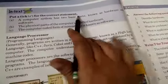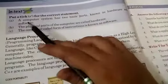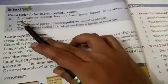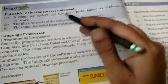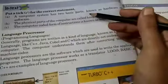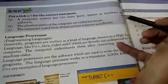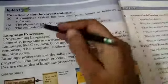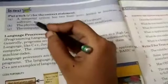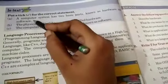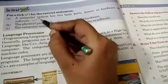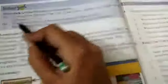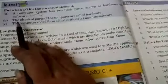Tick the correct statement. A computer has two basic parts known as hardware and software. What is the statement? True. So we will write here T.